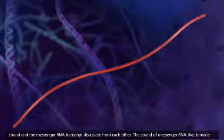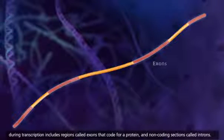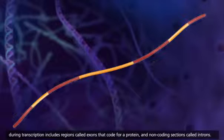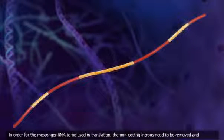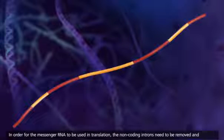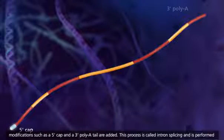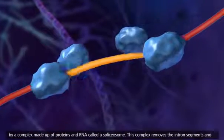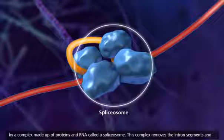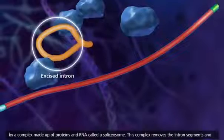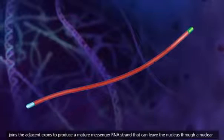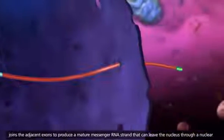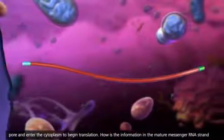The strand of messenger RNA that is made during transcription includes regions called exons that code for a protein, and non-coding sections called introns. In order for the messenger RNA to be used in translation, the non-coding introns need to be removed, and modifications such as a 5' cap and a 3' poly-A tail are added. This process is called intron splicing, and is performed by a complex made up of proteins and RNA called a spliceosome. This complex removes the intron segments and joins the adjacent exons to produce a mature messenger RNA strand that can leave the nucleus through a nuclear pore and enter the cytoplasm to begin translation.